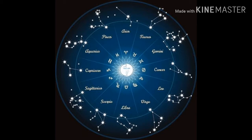Each of these 12 signs is given a name in Vedic Astrology. The English names for the twelve signs are: Aries, Taurus, Gemini, Cancer, Leo, Virgo, Libra, Scorpio, Sagittarius, Capricorn, Aquarius and Pisces. You can think of each sign as a house in Vedic Astrology.